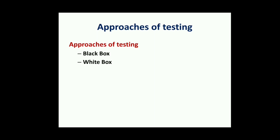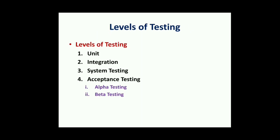Black box testing is a kind of system testing where you test without looking at the code. White box testing is where you look at the code and can set breakpoints — it's a kind of unit testing. In upcoming videos, I'll post content on each of these individual topics. Now, levels of testing: unit testing, integration testing, system testing, and finally acceptance testing.